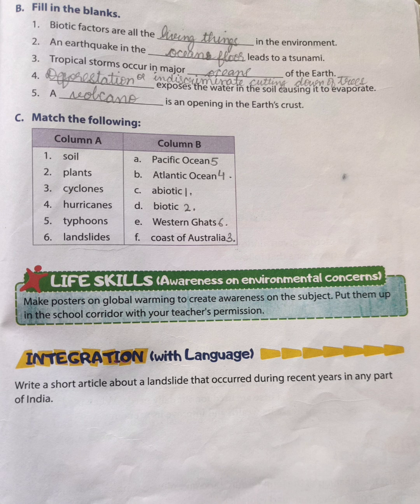Match the following. 1: Soil — answer is Abiotic. 2: Plants — answer is Biotic (D). 3: Cyclones — answer is Coast of Australia (F). 4: Hurricanes — answer is Atlantic Ocean (B). 5: Typhoons — answer is Pacific Ocean (A). 6: Landslides — answer is Western Ghats (E).